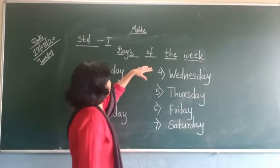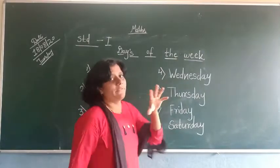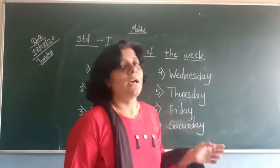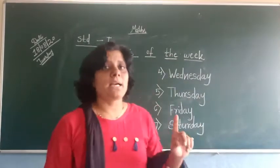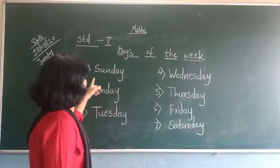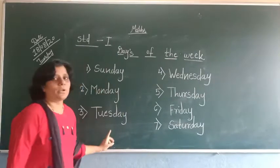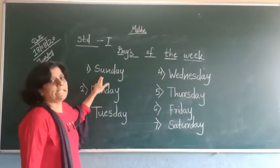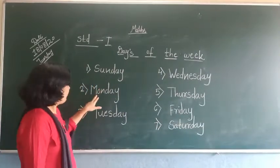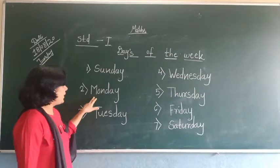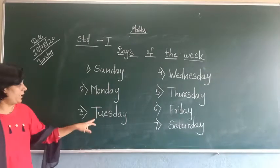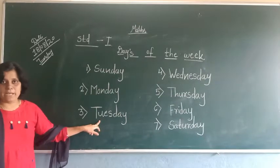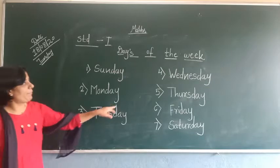Days of the week. There are 7 days in a week and spellings I wrote on the blackboard. As you know: S-U-N-D-A-Y Sunday, M-O-N-D-A-Y Monday, T-U-E-S-D-A-Y Tuesday.